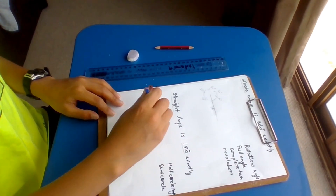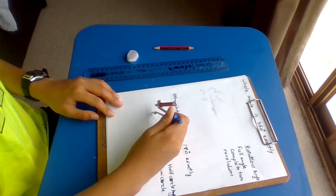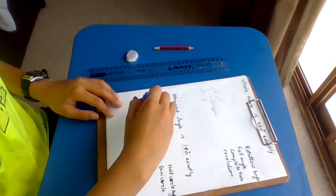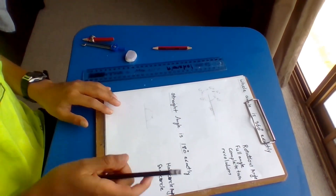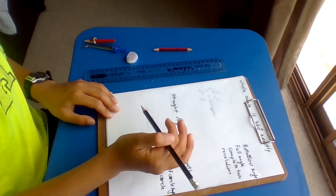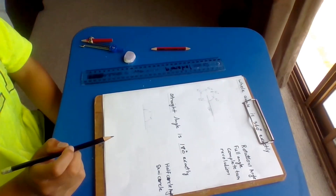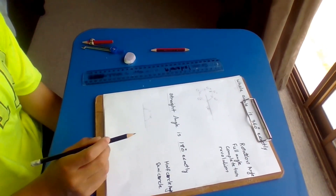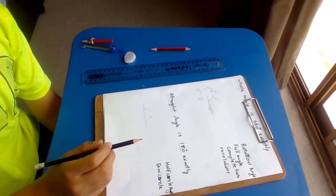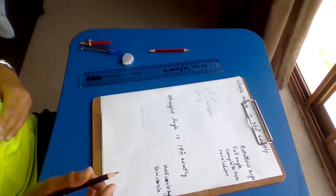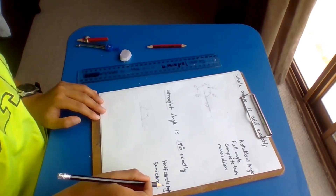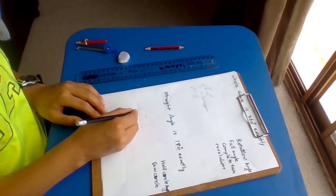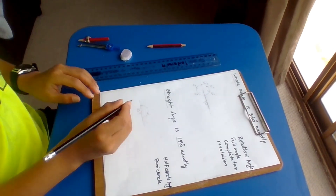Like this. Another arc. Now that's a semi-circle and it measures 180 degrees. You can even call it a half circle angle. This is 180 degrees. Done.